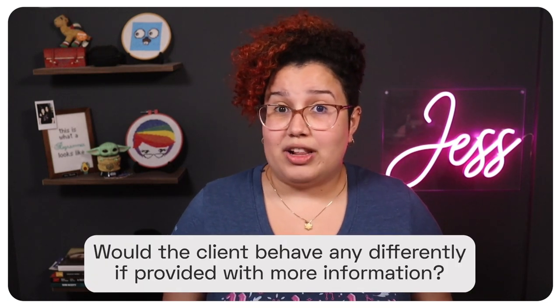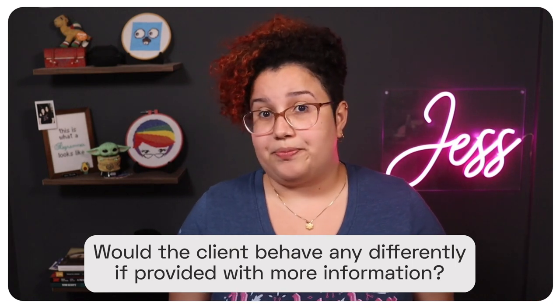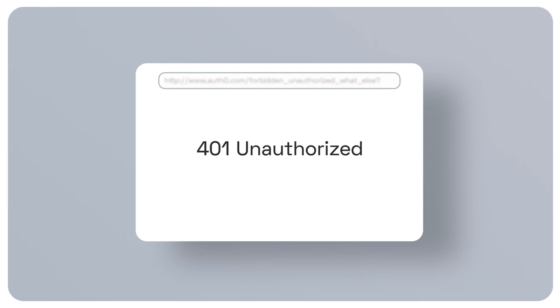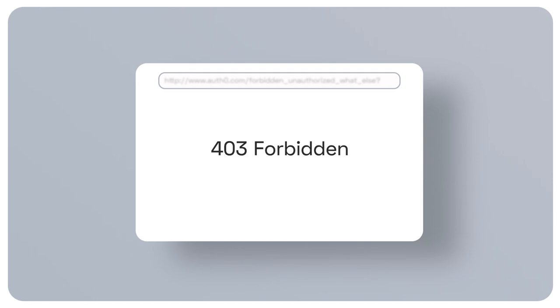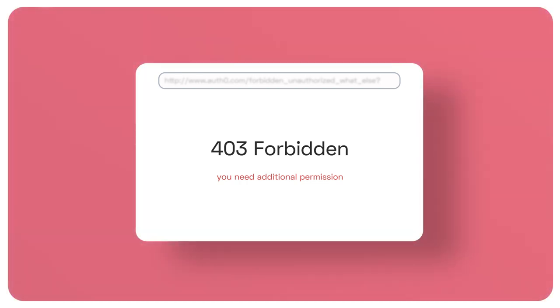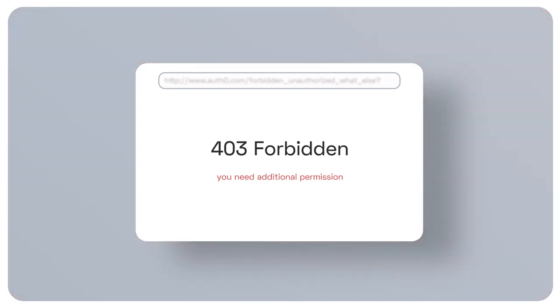The basic principle on sharing additional information should be based on the answer to this question: would the client behave any differently if provided with more information? For example, in the case of a response with a 401, does the client's behavior change when it knows that the token is expired or revoked? Either way, the client must request a new token, so adding that information doesn't really change the client's behavior. But with a 403 forbidden, by informing your client that it needs a specific permission, your API makes the client learn what to do next — for example, requesting additional permission. If your API doesn't provide this additional information, the client would behave differently because it doesn't know what to do to access that resource.